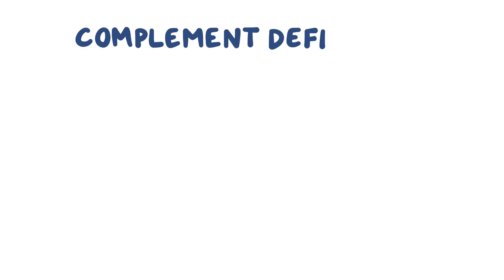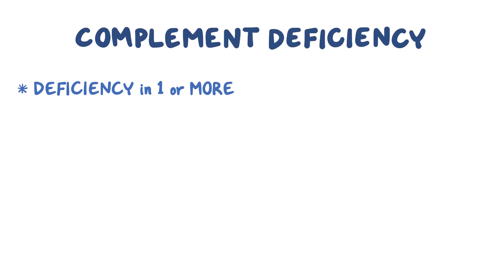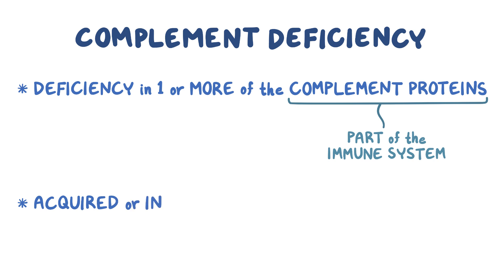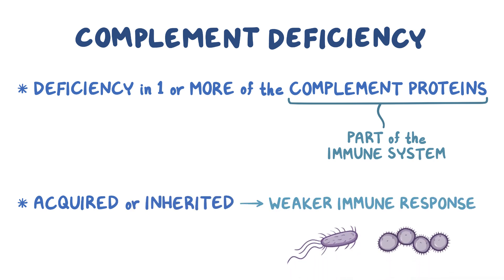With complement deficiency, there's a deficiency in one or more of the complement proteins, which are part of the immune system. Complement deficiencies can either be acquired or inherited, and often result in a weaker immune response to infections.